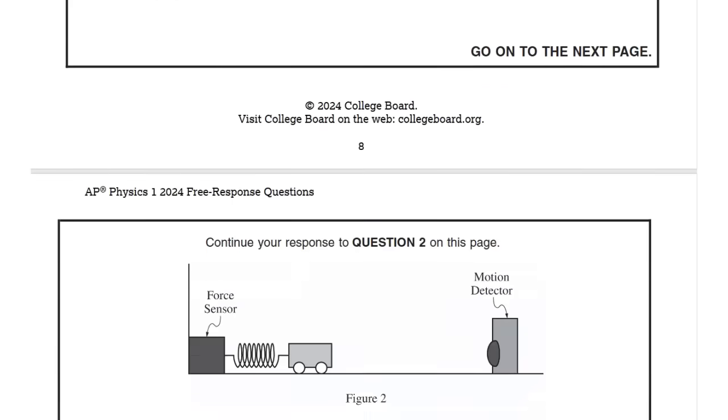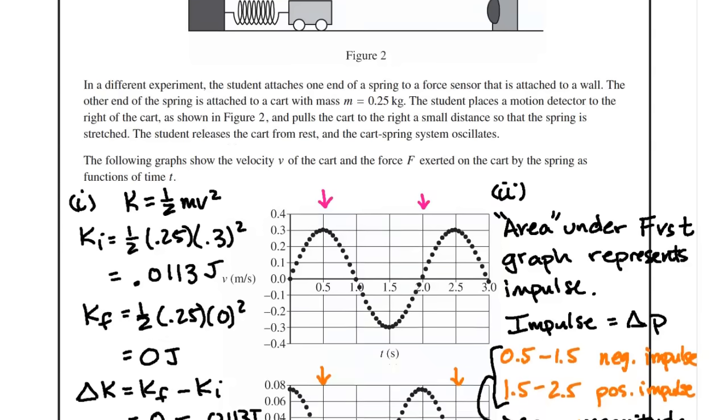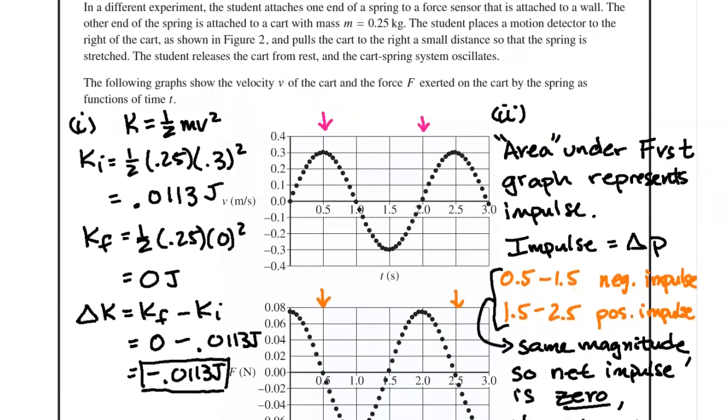Now we're going to move to the next section of this question. In a different experiment, the student attaches one end of a spring to a force sensor that is attached to a wall. The other end of the spring is attached to a cart with a mass of M equals 0.25 kilograms. The student places a motion detector to the right of the cart as shown in figure two and pulls the cart to the right a small distance so that the spring is stretched. The student releases the cart from rest and the cart spring system oscillates. The following graphs show the velocity of the cart and the force exerted on the cart by the spring as functions of time t.